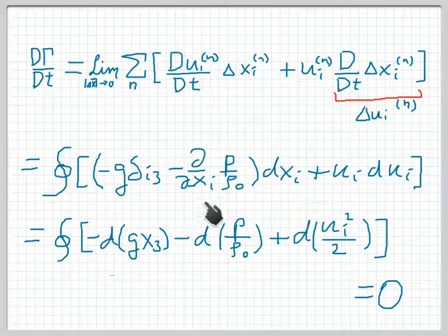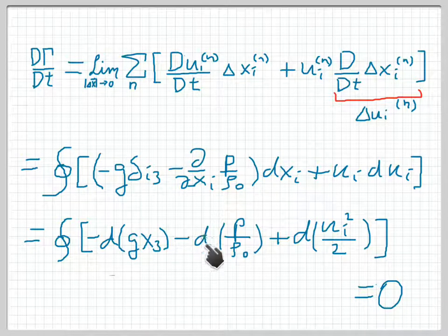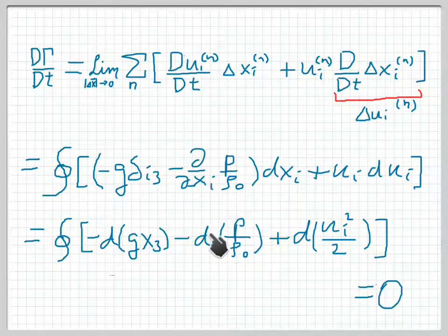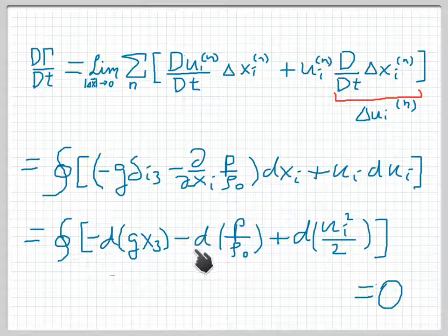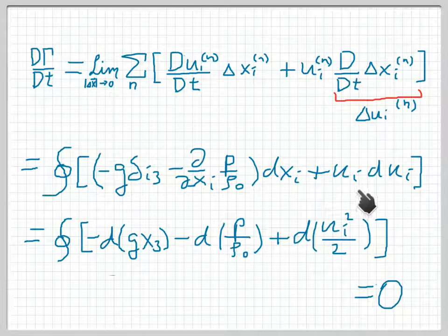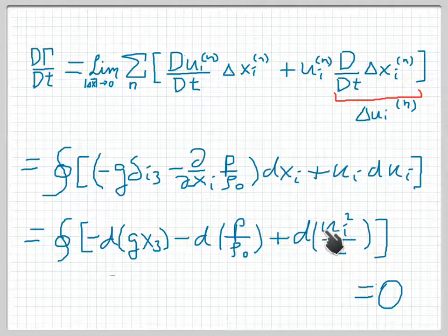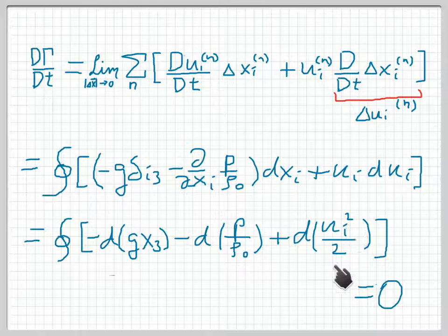The next term is also a perfect differential. It's just d by dxi of this times dxi summed over i. What you wind up with, by the chain rule, is the perfect differential of p over ρ₀. And then finally, ui dui is the perfect differential of ui² over 2.